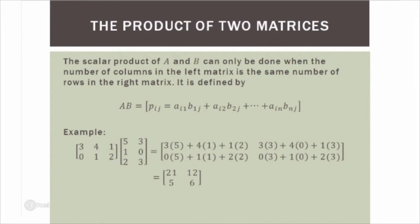Now the product of two matrices. The product of A and B can only be done when the number of columns in the left matrix equals the number of rows in the right matrix. We go across the row of the left matrix and down the column of the right matrix — so 3 times 5, plus 4 times 1, plus 1 times 2 — giving the top left entry of the output. The resulting matrix has the number of rows from the first matrix and the number of columns from the second matrix, making it a 2 by 2 matrix.